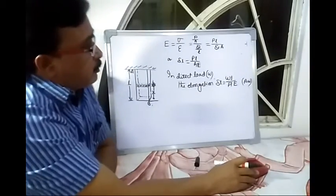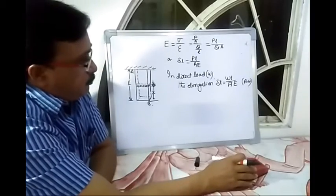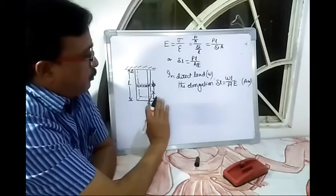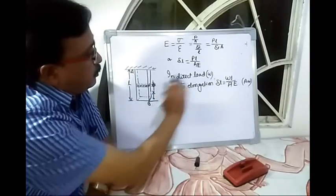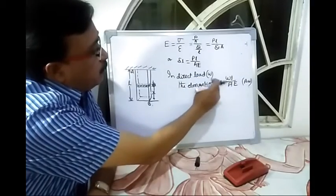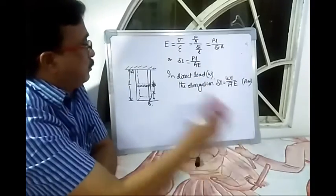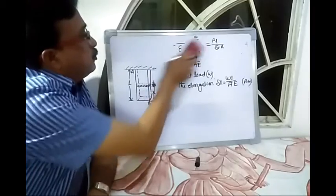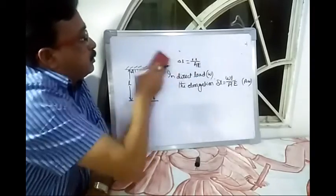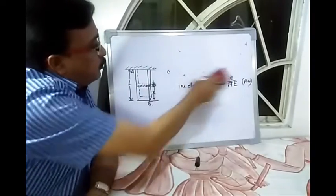Today I shall discuss the elongation due to self-weight. So we see that in direct load the elongation delta L is equal to WL by AE. Now we discuss the elongation due to self-weight of the body.